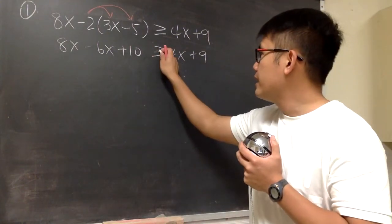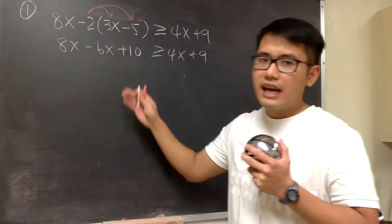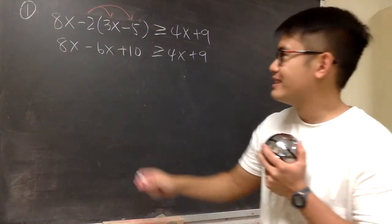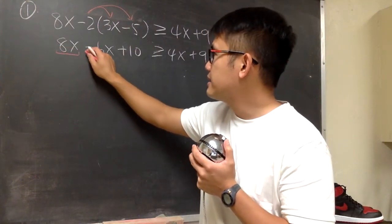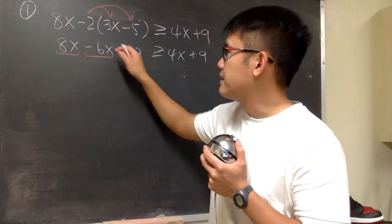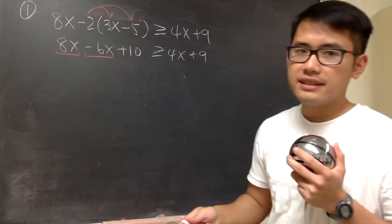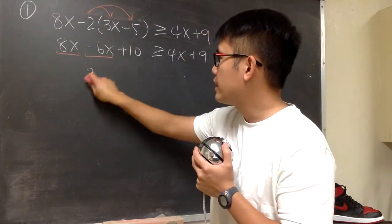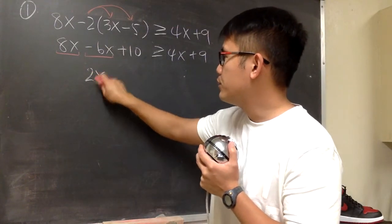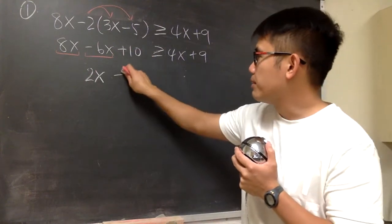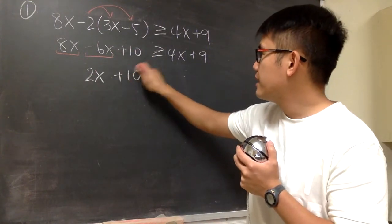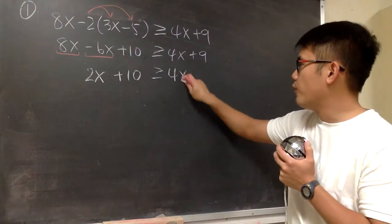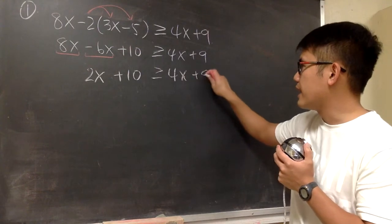On the left-hand side, we can combine like terms, because we have 8x minus 6x. After we combine them, we get positive 2x. So that's 2x plus 10, and this is still greater than or equal to 4x plus 9.